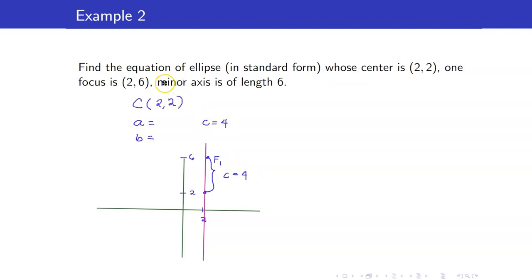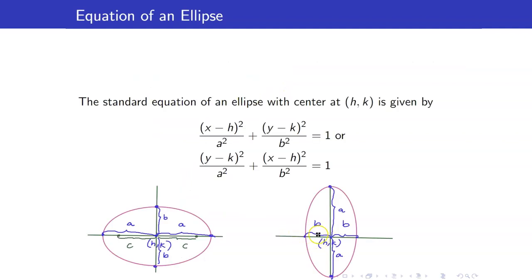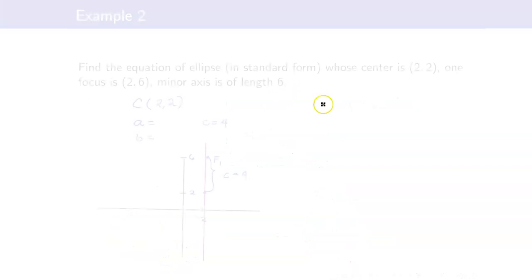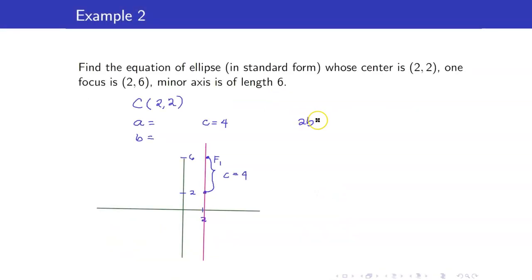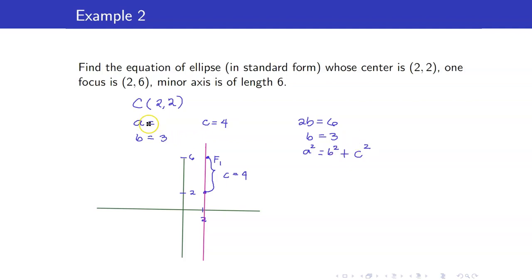We are given that the minor axis has length 6, and the length of the minor axis equals 2b. So 2b = 6, therefore b = 3. We already have b and c. Using the relationship a² = b² + c², a is the hypotenuse of a right triangle with legs 3 and 4, therefore a = 5.